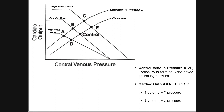Point C represents exercising at positive inotropy and positive chronotropy, but now associated with augmented venous return. Point C is the case where we're exercising and the skeletal muscle pumps are active, increasing venous return. We also have vasoconstriction of veins redistributing blood to the arterial side, ultimately leading to increased venous return. Point C is actually more representative of normal exercise than point B, since those compensatory mechanisms are typically engaged.